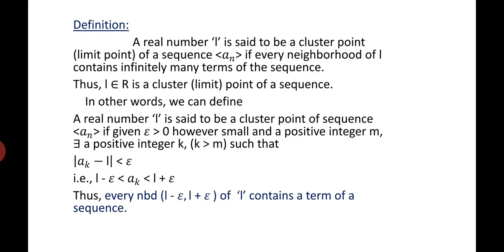There exists a positive integer K greater than M such that |A_K - L| < epsilon. When we remove the mod sign, we get L - epsilon < A_K < L + epsilon. Therefore, every neighborhood (L - epsilon, L + epsilon) of L contains a term of the sequence.